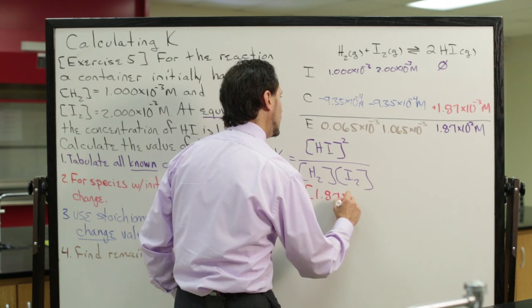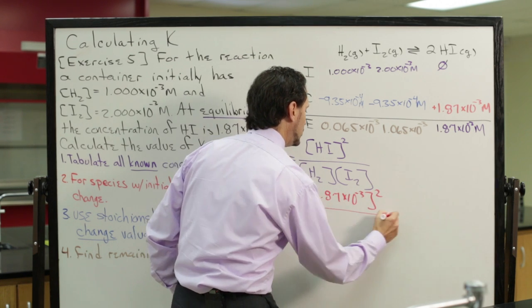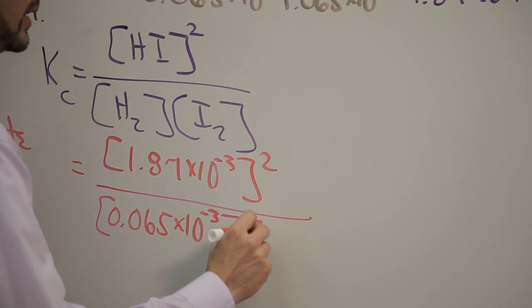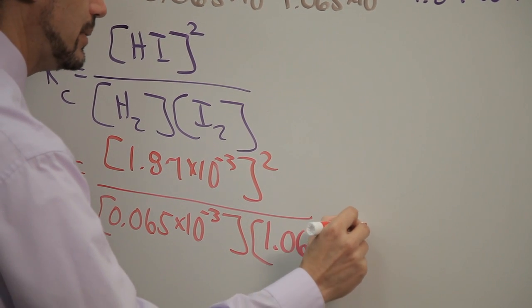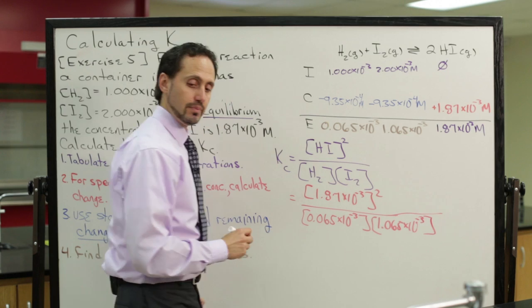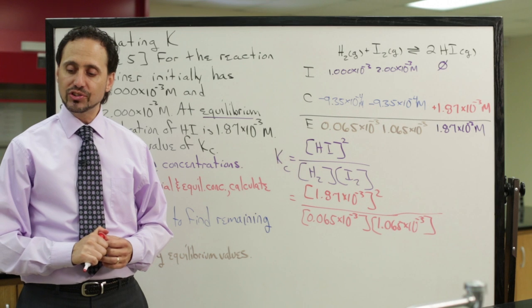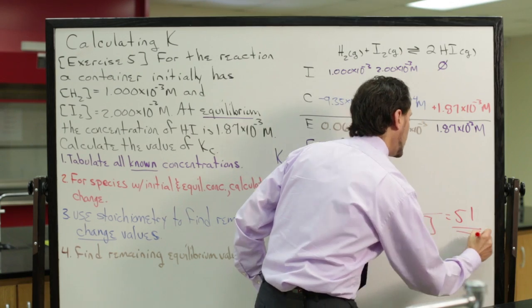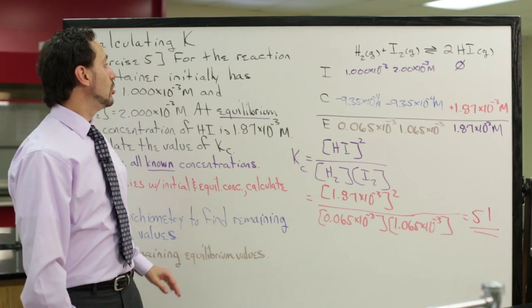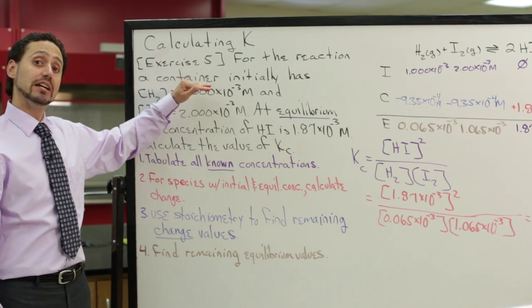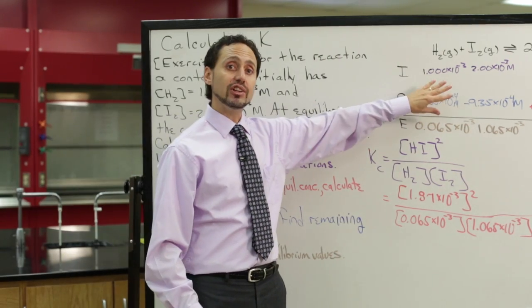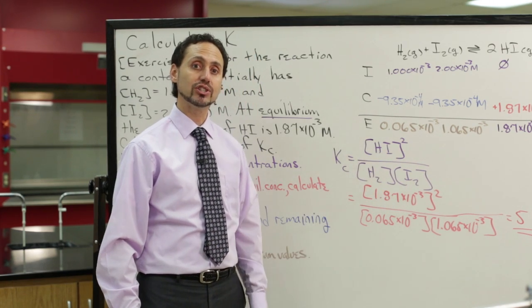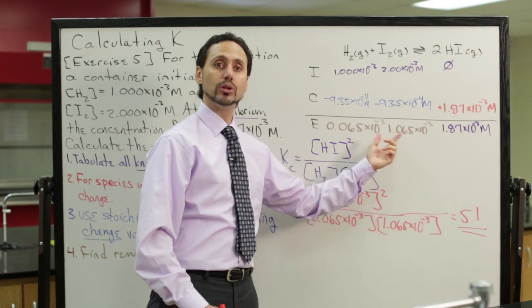Plugging in the values: (1.87 × 10⁻³)² divided by (0.065 × 10⁻³) times (1.065 × 10⁻³). When you do that on your calculator, you get an equilibrium constant value of 51. In this exercise, we learned that even without all equilibrium concentrations given, we can use the ICE table to find the missing ones, then apply the equilibrium constant expression to calculate Kc.